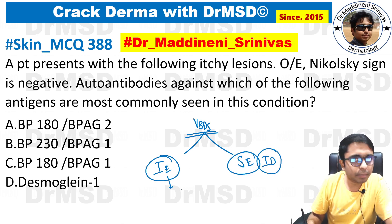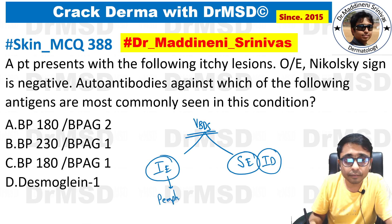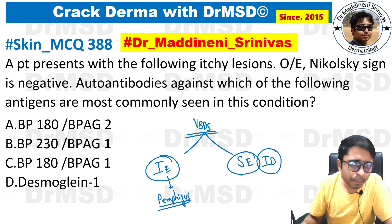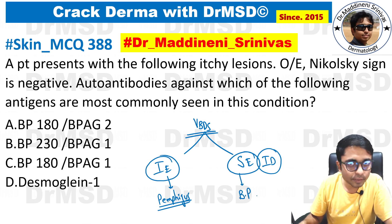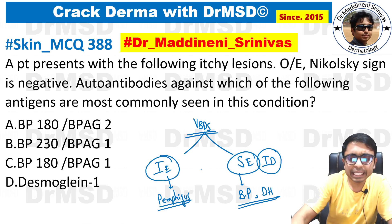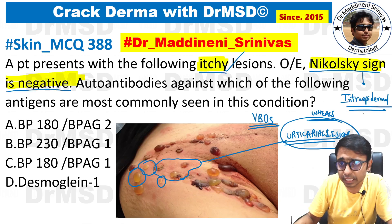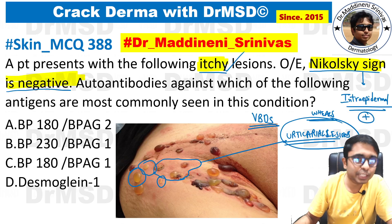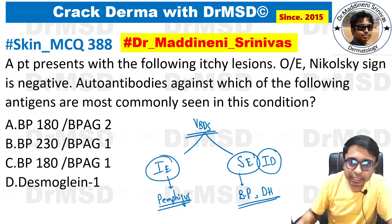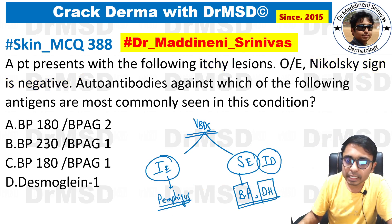One is intra-epidermal vesiculobullous disorders and the other one is sub-epidermal, or intra-dermal, blistering disorders. In intra-epidermal blistering disorders, the most important example you must remember is the pemphigus group of disorders. And in the sub-epidermal blistering disorders, the most important ones are bullous pemphigoid and dermatitis herpetiformis. In the MCQ, Nikolsky's sign — which is positive in intra-epidermal blistering disorders — is negative.